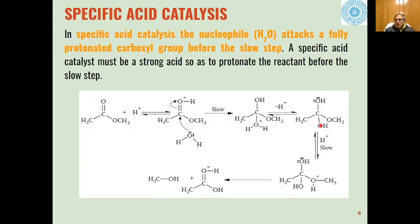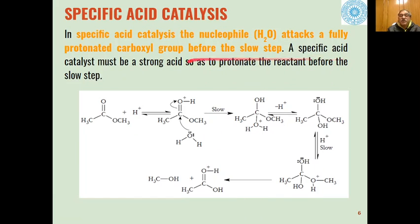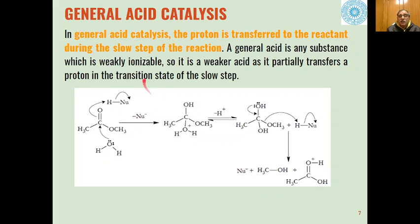This intermediate is converted under aqueous conditions into the next intermediate, and ultimately the hydrolysis products — alcohol and carboxylic acid — are formed. This is an example of specific acid catalysis because the nucleophile has attacked a fully protonated carboxyl group before the slow step.